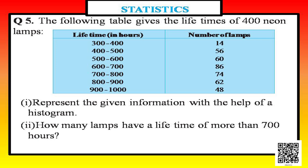Let us discuss question number five of exercise 14.3. The question is: the following table gives the lifetimes of 400 neon lamps. The first column is lifetime in hours with class intervals 300 to 400, 400 to 500, and so on up to 900 to 1000. The second column gives the number of lamps: 14, 56, 60, 86, 74, 62, and 48.